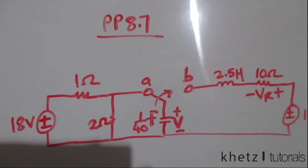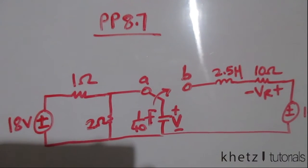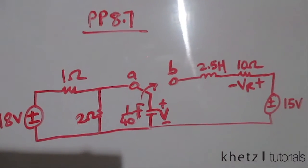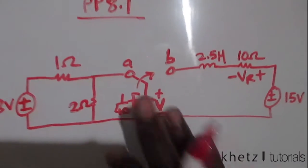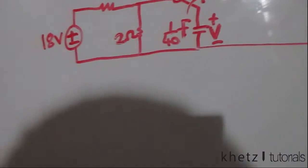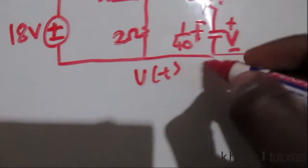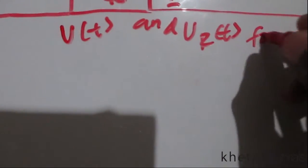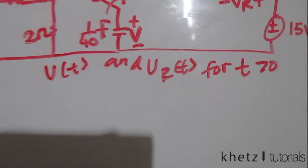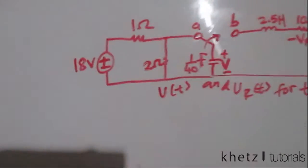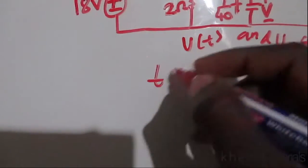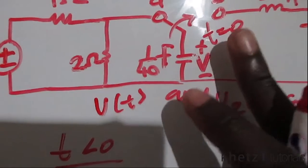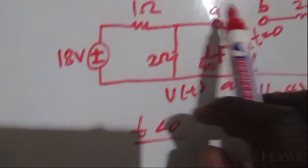Welcome to Guest Tutorials. In this video I'll be covering practice problem 8.7. Given this circuit, we are asked to find v(t) and vR(t) for time greater than zero. For time less than zero, we have the original circuit, and this switching action takes place at t equals zero.